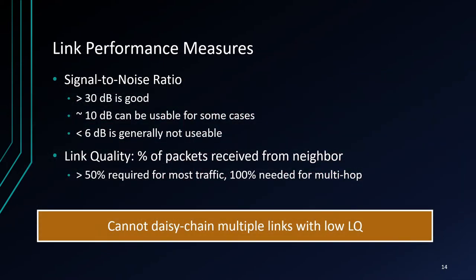We've talked about how some bands have more noise than others. In order to support high data rates, we need good connections between nodes. Two key metrics used to measure connection quality are signal-to-noise ratio and link quality. A signal-to-noise ratio above 30 dB is great, 10 dB is usable for some cases, and 6 dB or less is essentially useless. Link quality is a measure of how many packets your node successfully receives from a neighboring node — the goal is to have link quality as close to 100% as possible. When it drops, nodes spend more time retransmitting data, slowing the network, so you cannot daisy-chain multiple low-quality links.